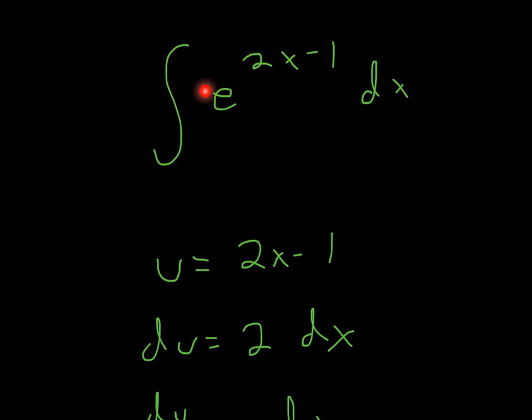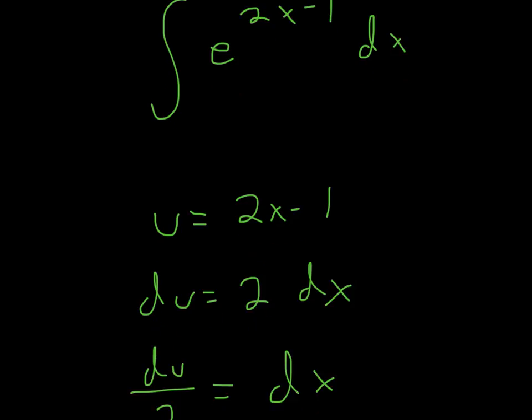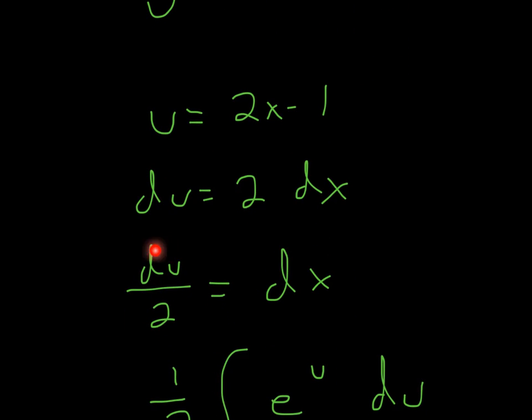Well, 2 is not there, so what you can do is just divide both sides by 2. So you'll get du over 2 is equal to dx.